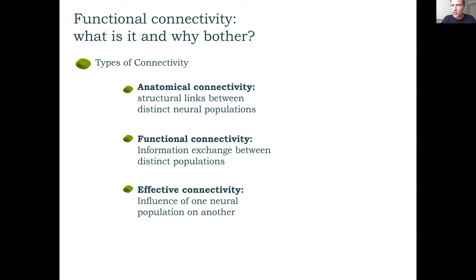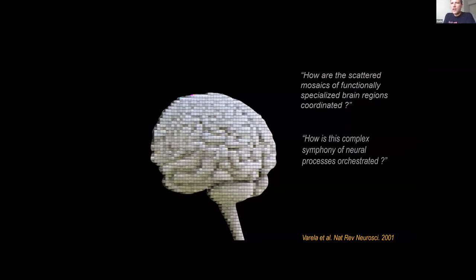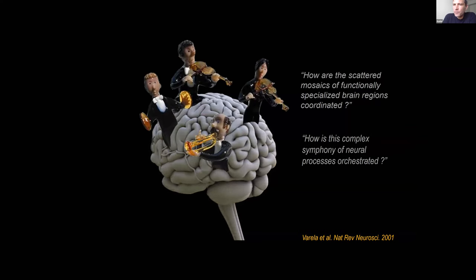To summarize: anatomical connectivity, functional connectivity, and effective connectivity. Using an analogy from Francisco Varela's 2001 Nature Reviews Neuroscience paper, he asked how the scattered mosaics of functionally specialized brain regions are coordinated — or, how is the complex symphony of neuronal processes orchestrated? You can imagine each part of the brain as a specialized musician expert in their instrument — that would be functional specialization.